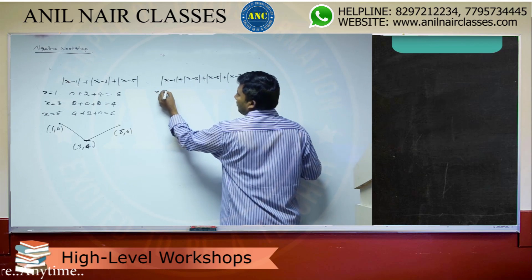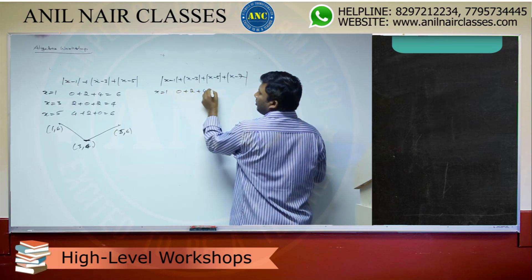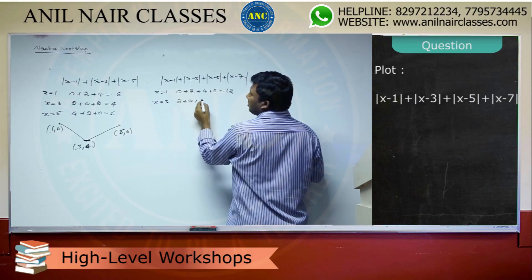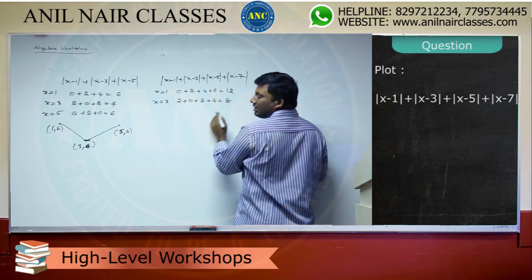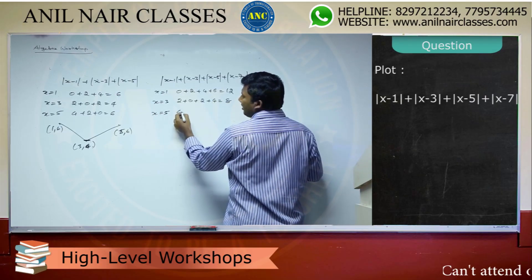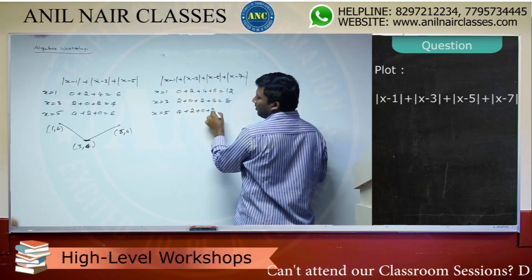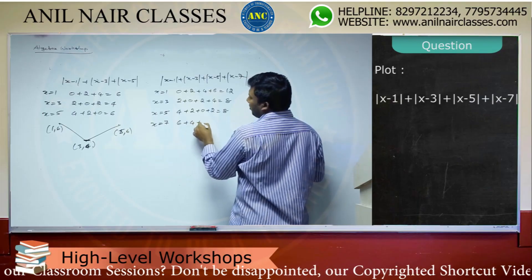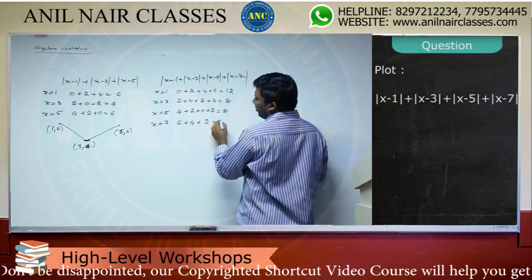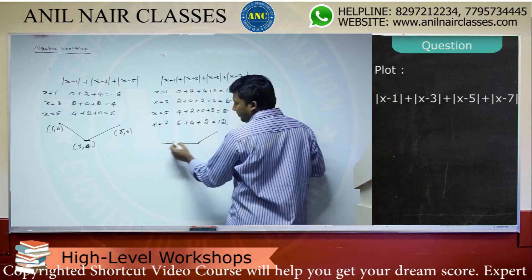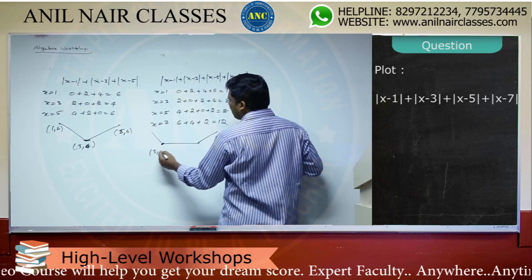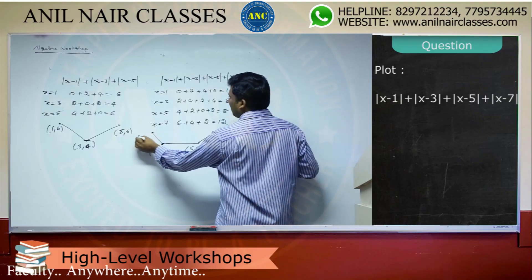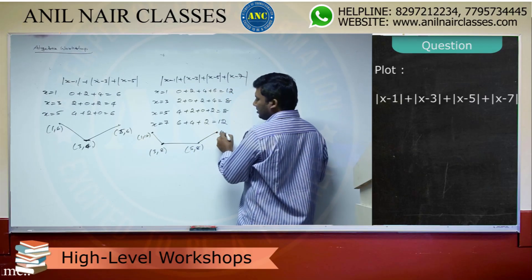Now for mod x minus 1, plus mod x minus 3, plus mod x minus 5, plus mod x minus 7: if x is 1, we get 0 plus 2 plus 4 plus 6 equals 12. If x is 3: 2 plus 0 plus 2 plus 4 equals 8. If x is 5: 4 plus 2 plus 0 plus 2 equals 8. If x is 7: 6 plus 4 plus 2 plus 0 equals 12. So the graph has points at 1 comma 12, 3 comma 8, 5 comma 8, and 7 comma 12.